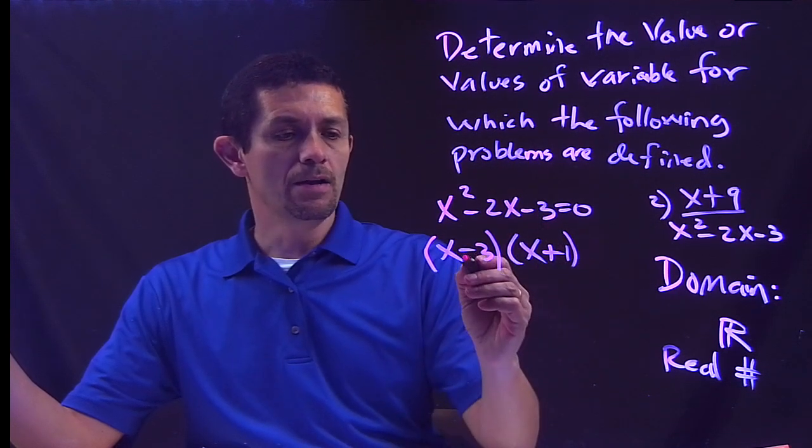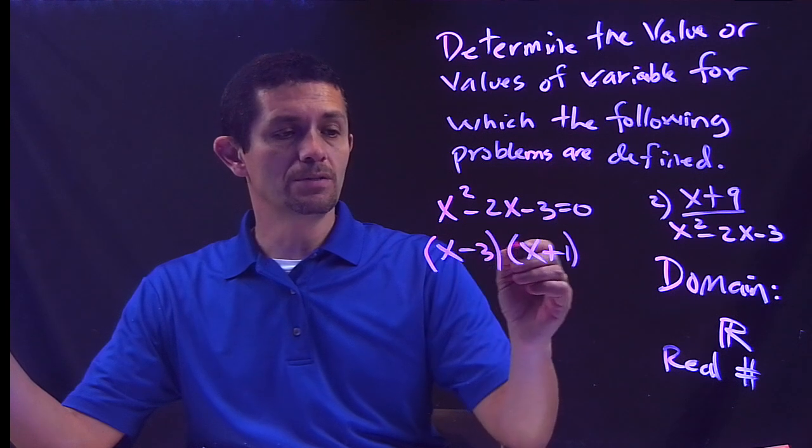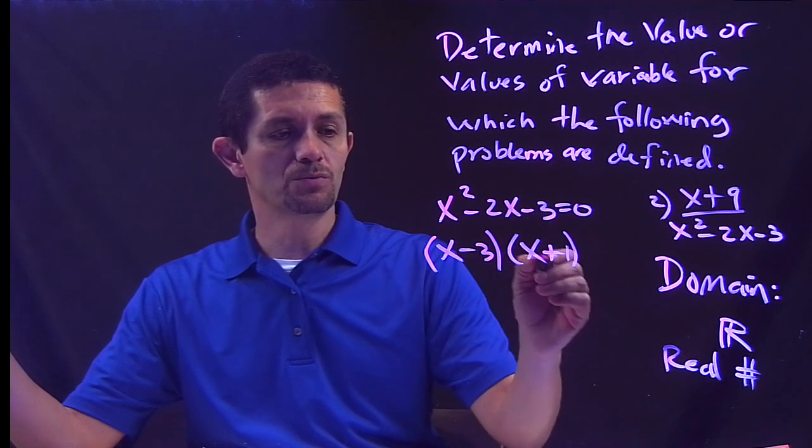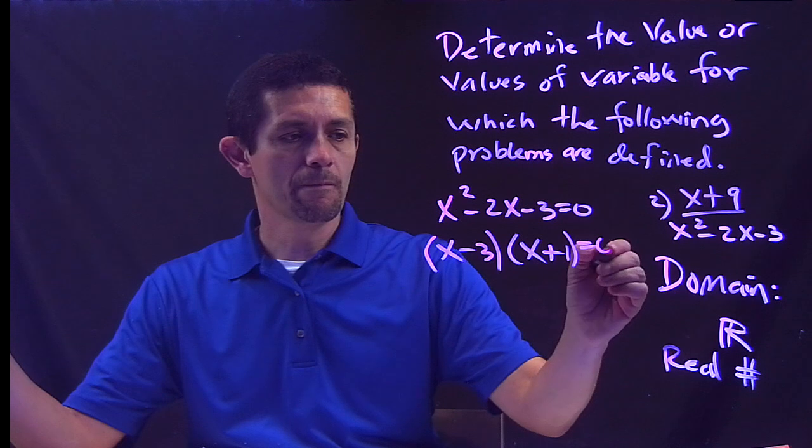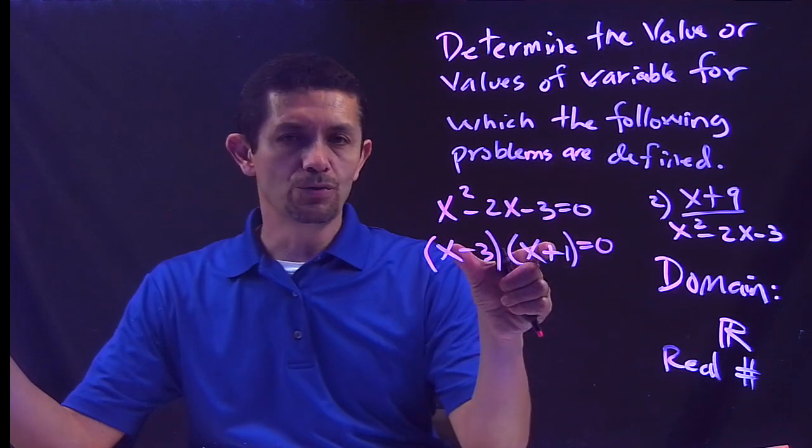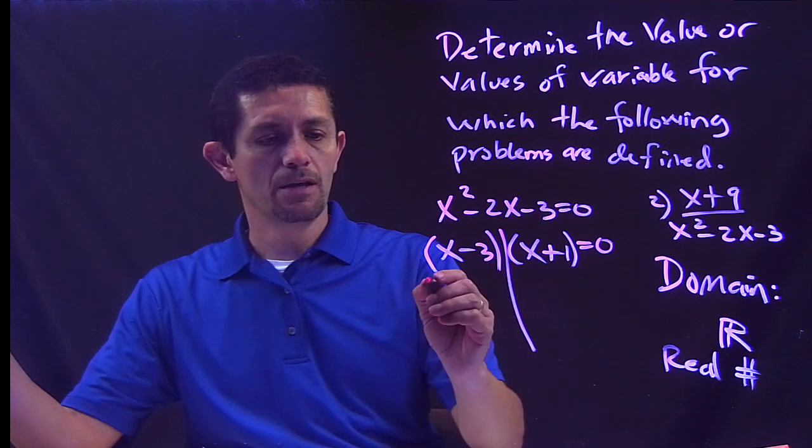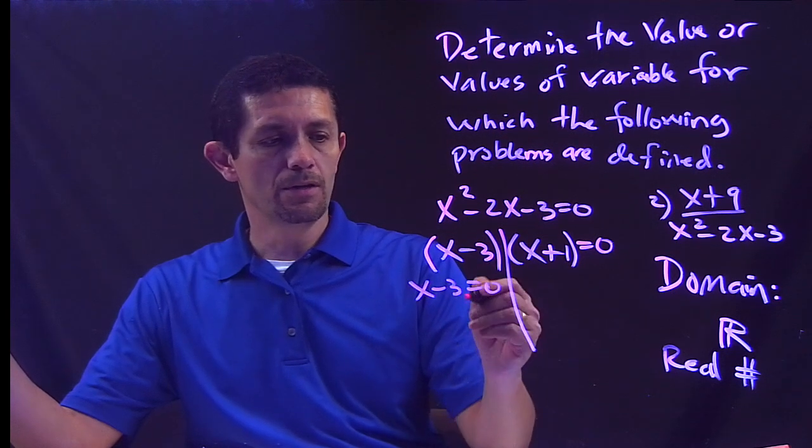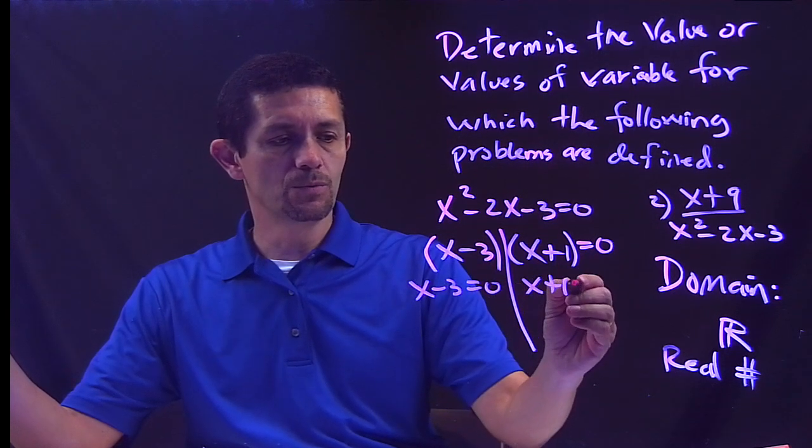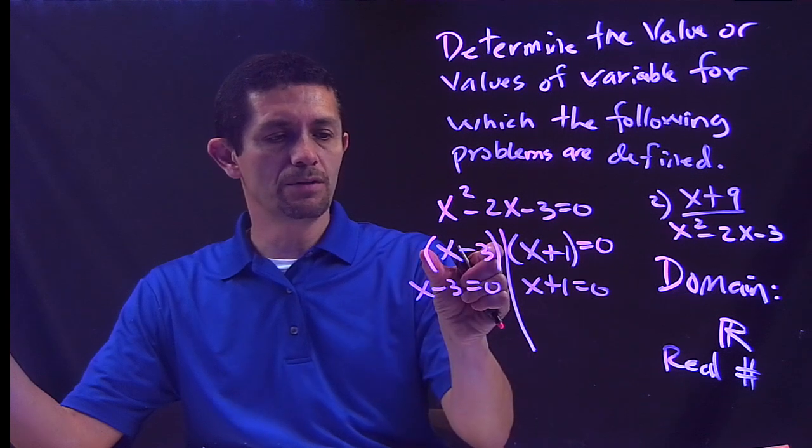Let's try 3 and 1. Negative 3 times 1 is negative 3. Negative 3 plus 1 is negative 2, so we're good. Now once I have my two factors equal to 0, I need to find the values of x, which is basically x minus 3 equals 0 and x plus 1 equals 0.